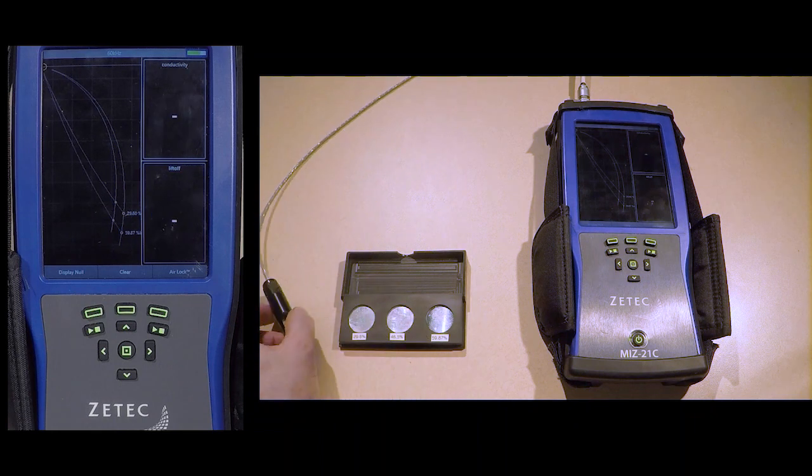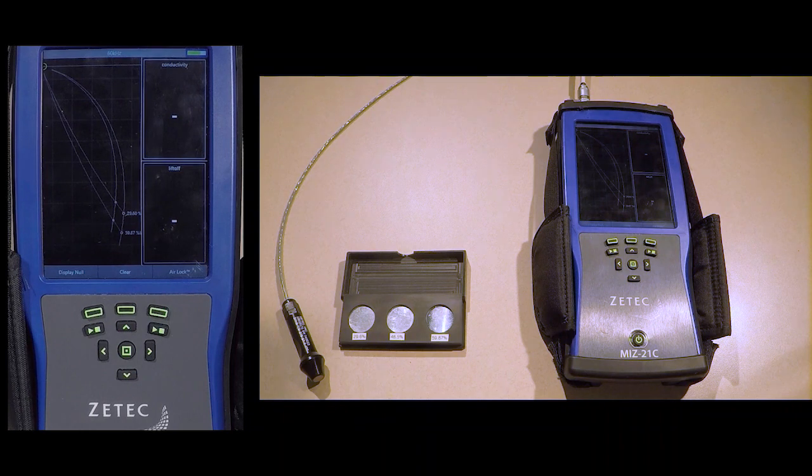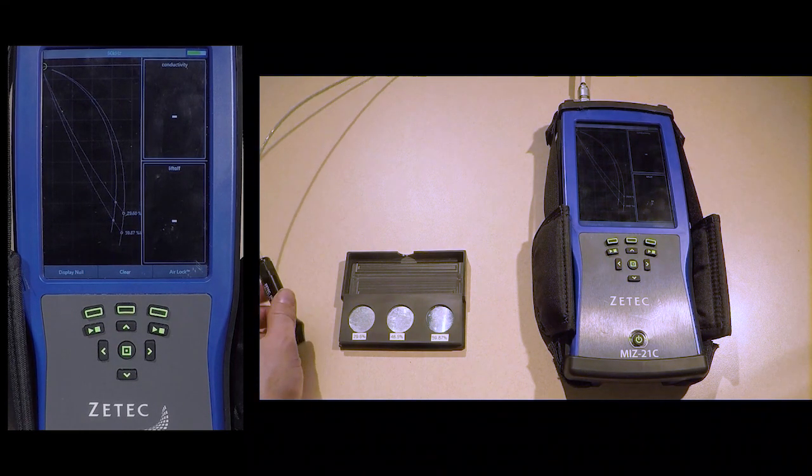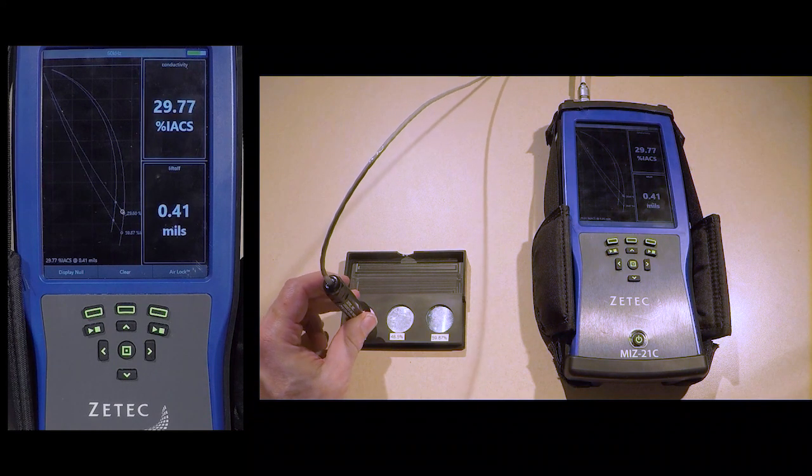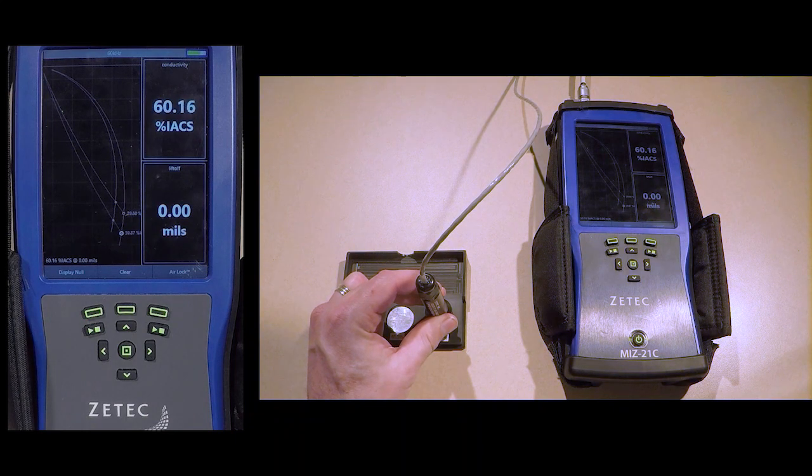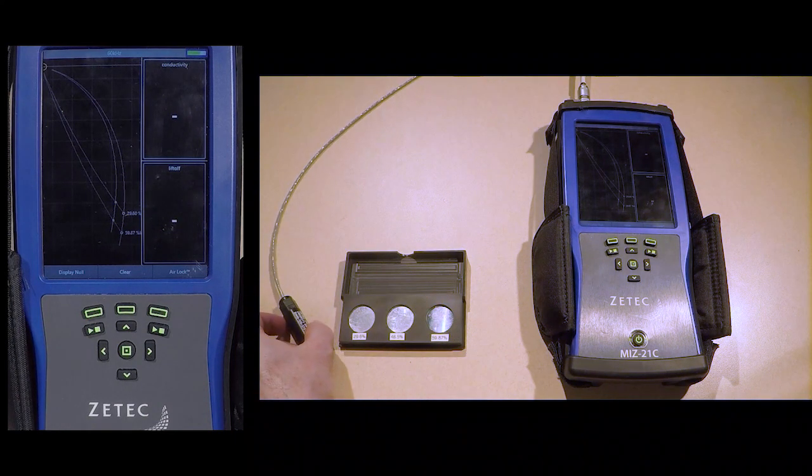Knowing the type of material is necessary to get accurate readings. For convenience, typical material IACS specifications can be found on the instrument, which will be shown later. Normal operation is the same as testing the standard. Apply the probe completely to the surface of the test specimen to obtain the IACS and coating thickness reading if valid. Compare this reading to the material IACS test specification.